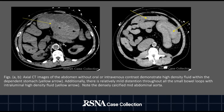Axial CT images of the abdomen without oral or IV contrast demonstrate high density fluid within the dependent stomach, as demonstrated by the yellow arrows. Mild distension can be seen throughout the small bowel loops on the right side of the screen. Also note the densely calcified mid-abdominal aorta.